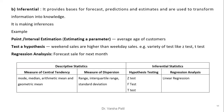Inferential statistics provides a base for forecasts, predictions, and estimates, and is used to transform information into knowledge by making inferences. Examples include point or interval estimation — estimating a parameter such as the average age of customers from a sample. Hypothesis testing, for example comparing weekend sales versus weekday sales, uses tests like z-test, t-test, and chi-square test. Regression analysis can forecast sales for the next month. These methods are summarized in a table distinguishing descriptive and inferential approaches.